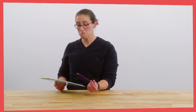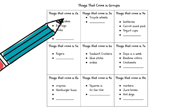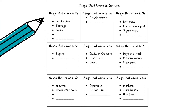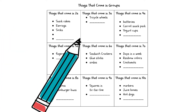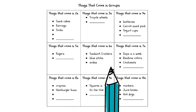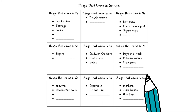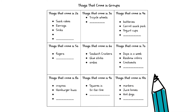I made a list of some more things that come in groups. Want to take a look? It's pretty cool. We've got eyes that come in pairs, so that's two. We've got three angles on a triangle. We've got six legs on an insect. We've got seven days in a week. And we've got ten fingers.